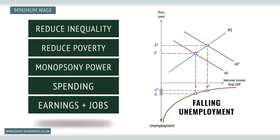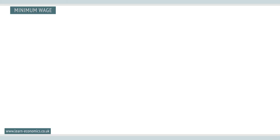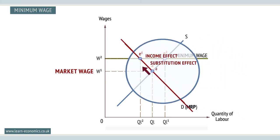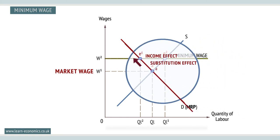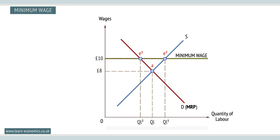However, the classical free market argument against the national minimum wage is that it can create unemployment by distorting labour markets. Assuming the minimum wage is higher than the market-clearing wage, demand will contract and supply extend. The contraction of demand is the result of a combined income and substitution effect in response to the higher wage rate. For example, a minimum wage of £10 an hour would create a contraction in demand to E1, but supply would extend to E2, as more low-skilled workers are encouraged to look for work, creating classical unemployment of E1 to E2.